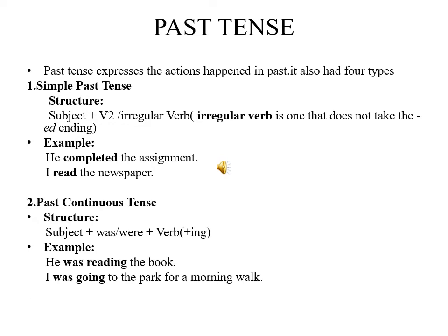Now, let us study the second type of tense, that is past tense. Past tense expresses the actions happened in past. It also has four types. First is simple past tense. Its structure is subject plus V2. An irregular verb is one that does not take the ED ending. For example, he completed the assignment. I read the newspaper.